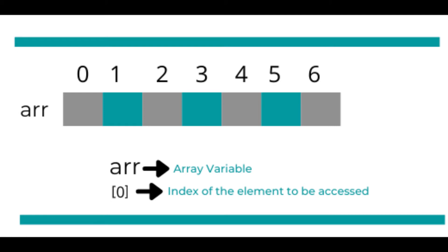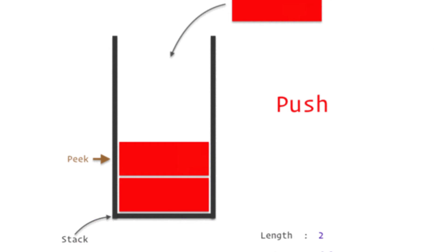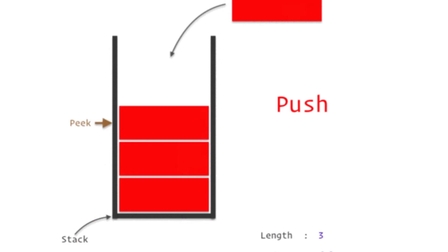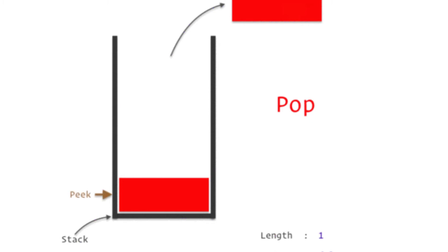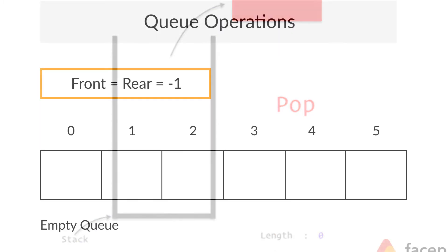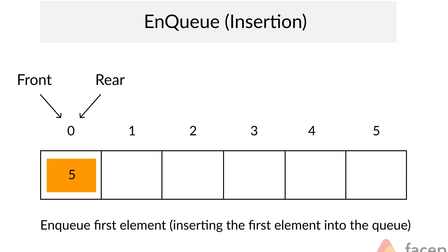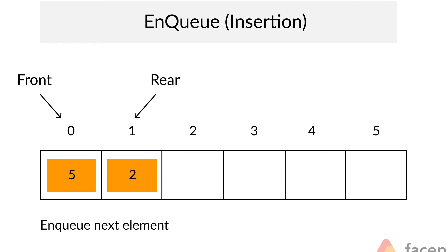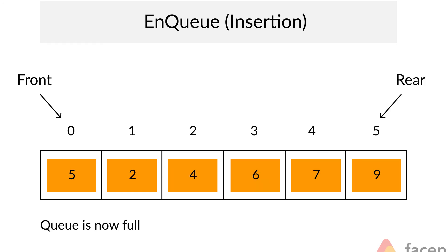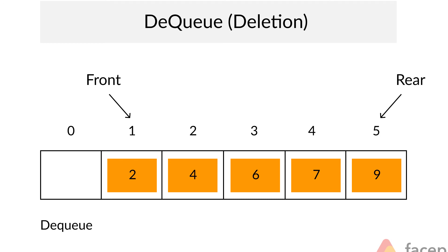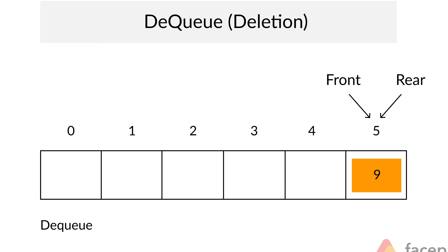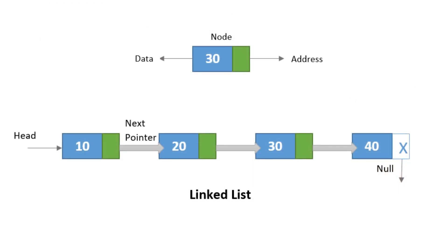Next is stack. Stack is a container of objects that are inserted and removed according to the Last In First Out principle. Queue follows the same concept but the principle is changed to First In First Out, whereas stack uses Last In First Out.